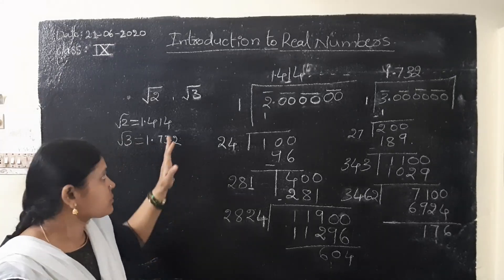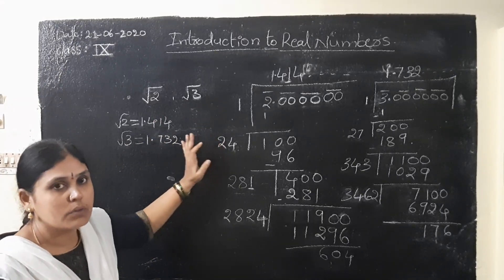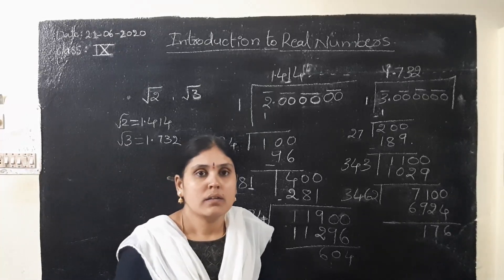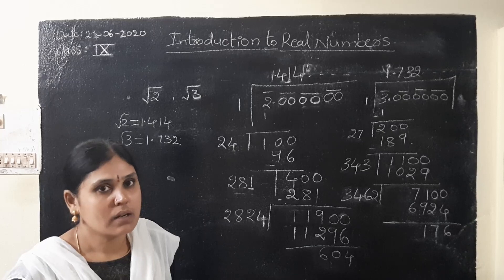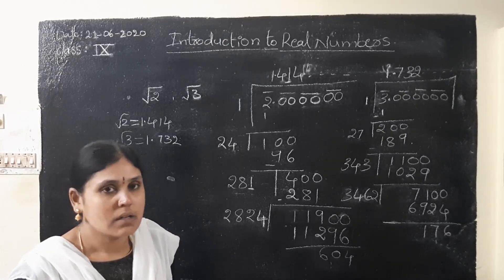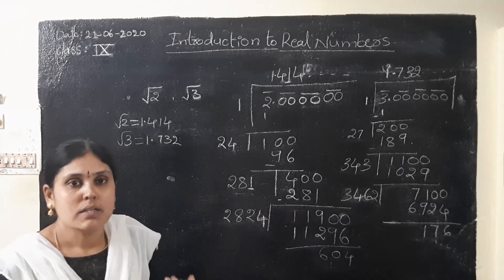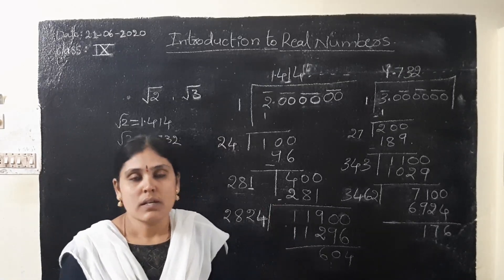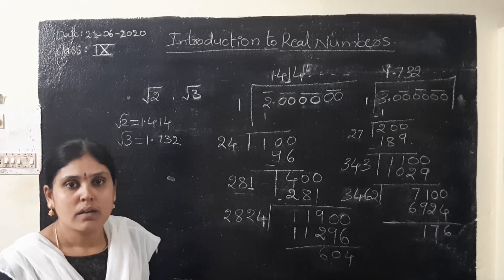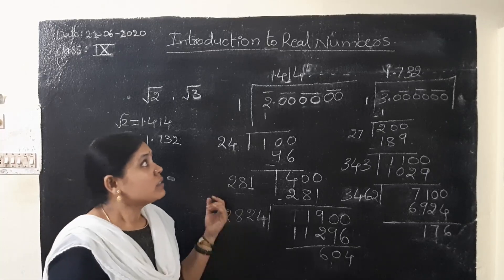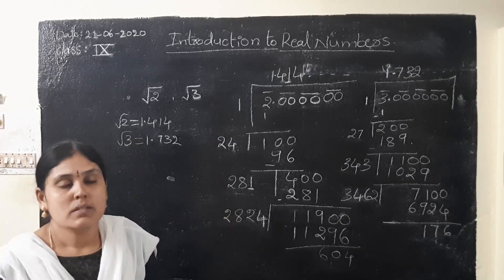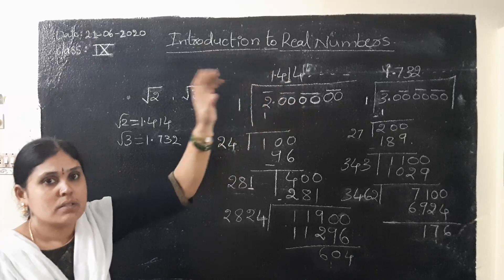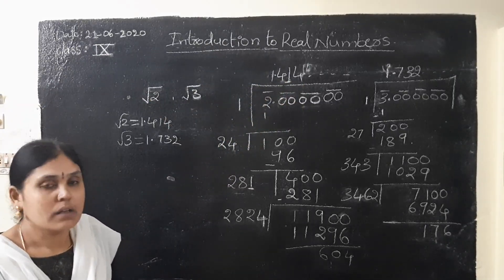Here children, observe one thing: these are the irrational numbers — root 2 and root 3. There is another definition for irrational numbers. What is an irrational number? The number which we cannot write in the form of P by Q is called an irrational number, where P and Q are integers and Q is not equal to 0. Another definition: neither terminating nor repeating decimal is called an irrational number. So rational and irrational numbers combined together are called real numbers.